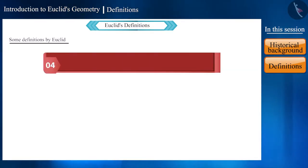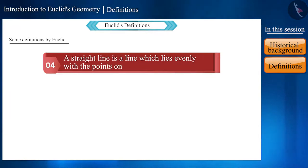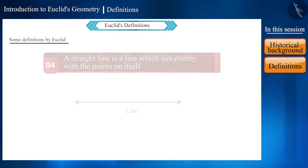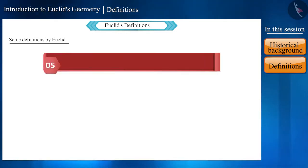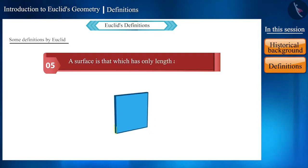This is the fourth definition: a line which lies evenly with the points on itself, that is, we can see that on joining many points a line is formed. The fifth definition is that a surface is that which has only length and breadth, that is, we can see that a surface has no thickness.